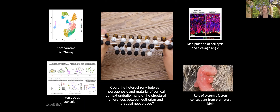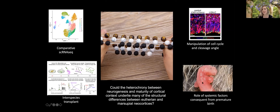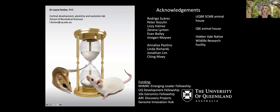In transplant experiments, we're looking at whether placing a mouse neuron in a dunnart context — or a dunnart neuron in a mouse context — changes the timing of that neuron's development and the direction its axons take when crossing the midline. We're also interested in development and evolution from a more systemic perspective, particularly how the incredibly premature birth of marsupials affects brain development through systemic factors like oxygenation, metabolism, thyroid signaling, and thermoregulation — all of which are known to affect brain development.